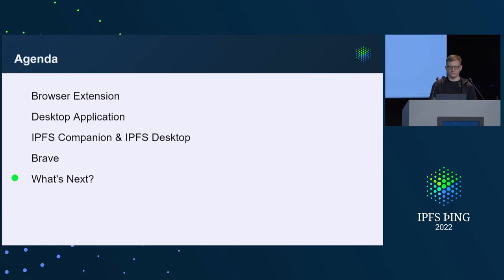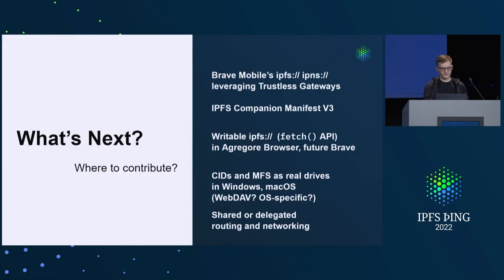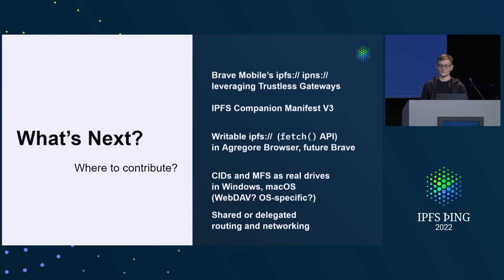So: browser extension, desktop application, Brave. What's next in this space? I'll briefly signal what's on our short and mid-term roadmap, which I'm happy to discuss in the workshop this week. First, Brave mobile — mobile browsers have challenges, but now that we have trustless gateways and trustless gateway retrieval is possible, mobile web browsers are able to support content-addressed data natively without running a full peer-to-peer stack. They could still use it as a fallback, but the default — which doesn't drain battery — could be a gateway or a pool of gateways.